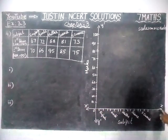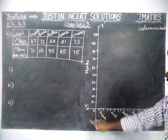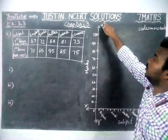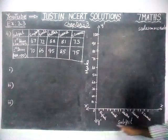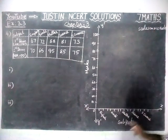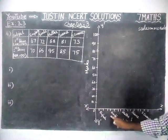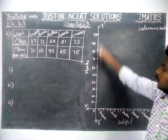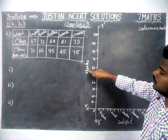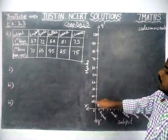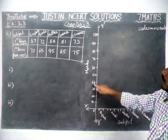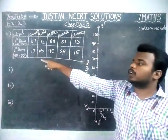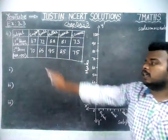In the x-axis, we have taken subjects: English, Hindi, Math, Science and Social Science. In the y-axis, we have taken the marks: 10, 20, 30, 40, 50, 60, 70, 80, 90, 100. Because maximum mark is equal to 100.